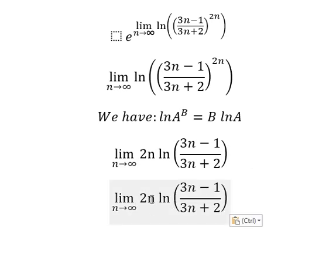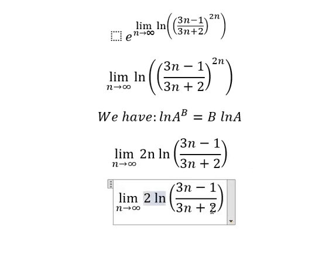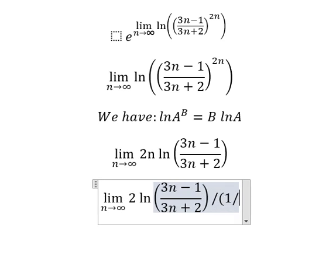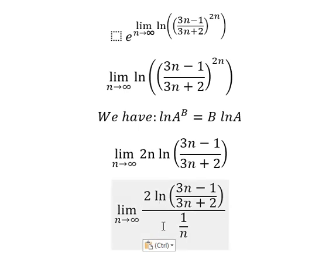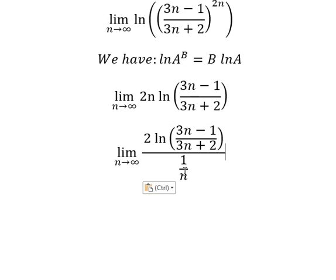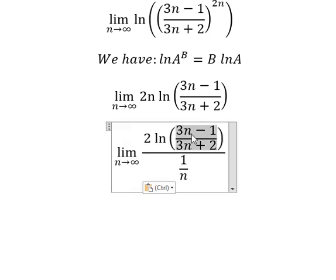We divide by n, and that should be like this. So that should be like this. Now when n approaches positive infinity, number one divided by positive infinity, you get zero. So for this one we divide by n on the numerator.